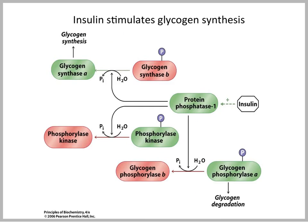Insulin is an anabolic hormone, and it stimulates glycogen synthesis by leading to a dephosphorylation of enzymes involved in this mechanism. Glycogen synthase, when phosphorylated, is an inactive enzyme. When glycogen synthase is dephosphorylated, it is active and glycogen synthesis can occur.